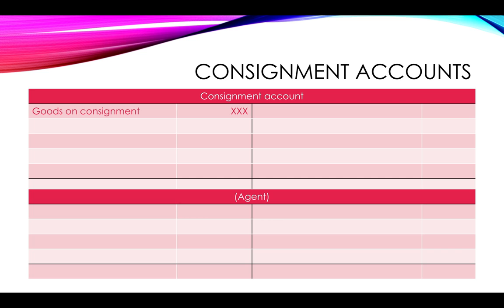To start with your consignment account, which calculates your profit, you will show your inventory that might have been sent to the agent. Notice that I'm not showing any liability for this in the agent's account as yet — although they have got the goods on hand, they do not owe any money for this. So this is simply an entry of goods from my inventory account, or possibly even directly from my purchases account, into my consignment account, which is like a little mini trading account.